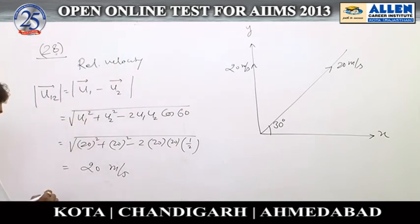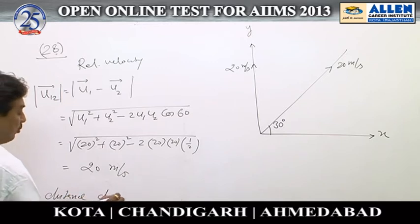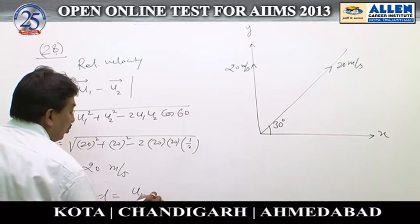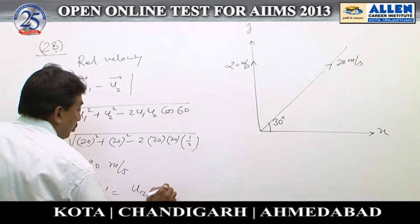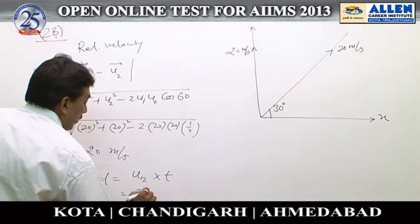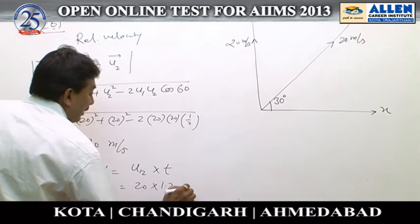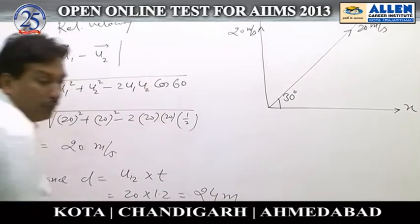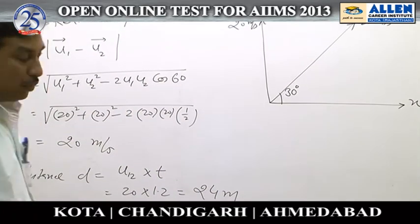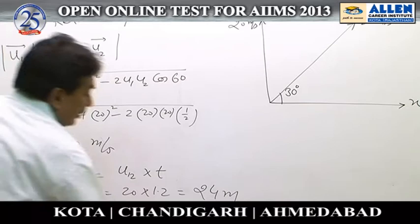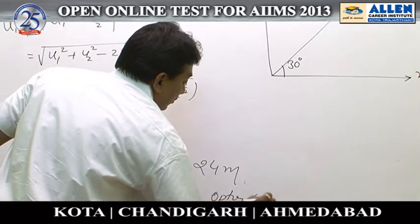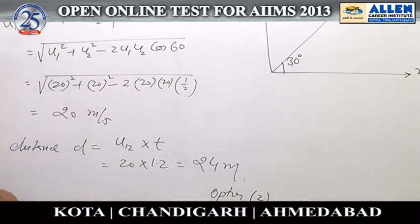...the distance can be directly written as d equals u12 times t. So, 20 times 1.2, which equals 24 meters. Option 2 is the correct answer.